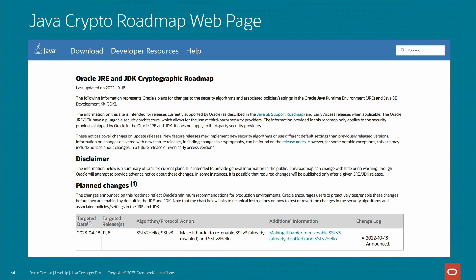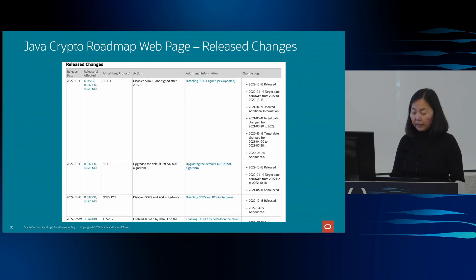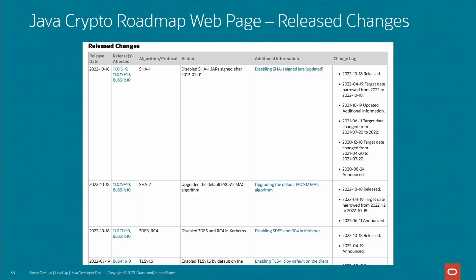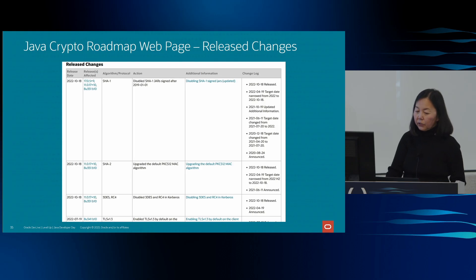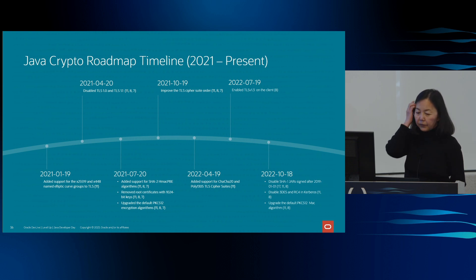Here is a screenshot of our crypto roadmap on our website. The information on this page is intended for releases currently supported by Oracle. As you can see, each change lists the affected algorithm or protocol, the proposed release timeline, and instructions on how to test ahead of time so you can determine if you would be affected. We also provide archived release changes so that customers can identify when changes happened and avoid surprises when upgrading. The additional information column usually provides instructions on how to revert any new default setting.